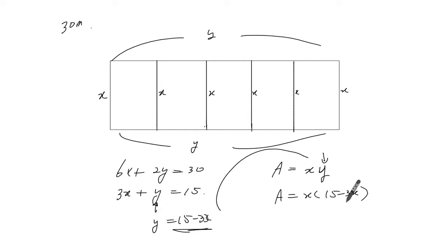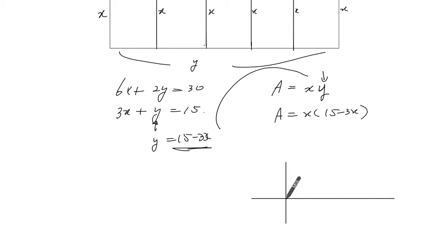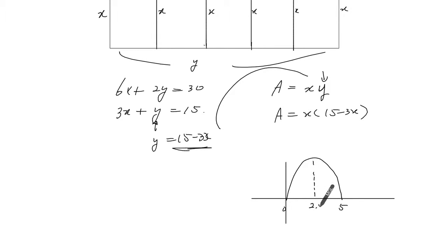Now this is a quadratic relation — two linears multiplied together — and it's a parabola with roots at 0 and 5, and the vertex is at X equals 2.5. So this will maximize when X is equal to 2.5, it will maximize the area.